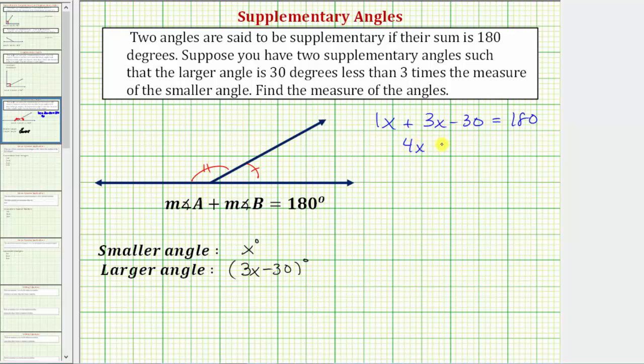So we have four x minus 30 equals 180. Next step, we isolate the x term by undoing the subtraction. So we add 30 to both sides. Simplifying, adding 30 undoes minus 30, or negative 30 plus 30 is zero. So we have four x equals 180 plus 30 is 210.